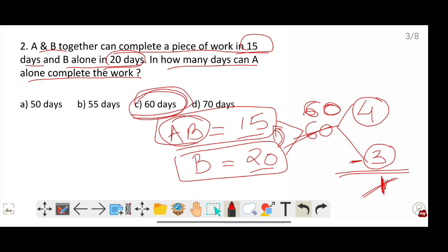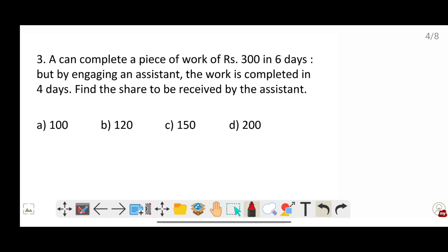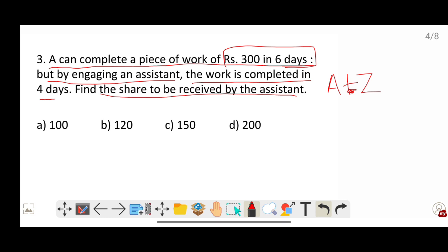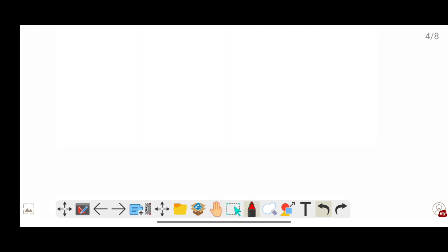Question number three: A can complete a piece of work in 300 days - no wait, the total payment is Rs. 300. A can do the work in 6 days, but by engaging an assistant, the work is completed in 4 days instead. Find the share to be received by the assistant.